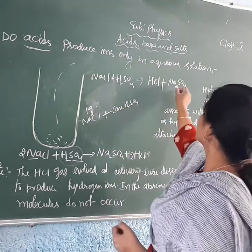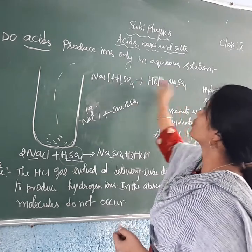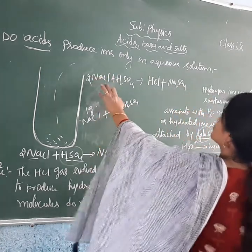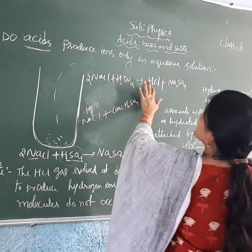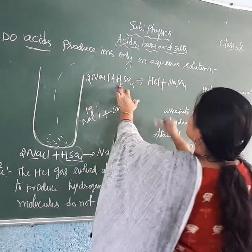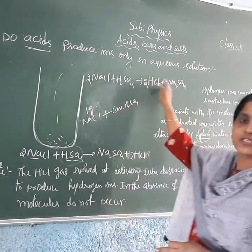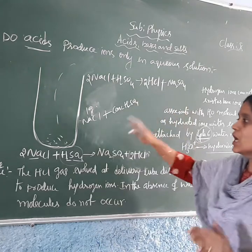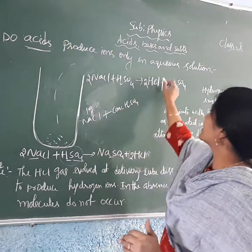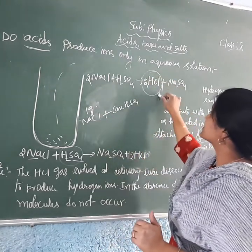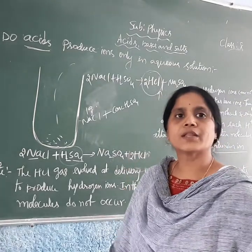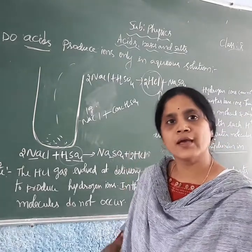Sodium sulfate has Na₂, and on the other side Na₁, so you must write a balancing coefficient of 2. This gives 4 HCl. With H₂ present, the equation is balanced. When these two reactants combine, they liberate hydrochloric acid in the form of a gas.